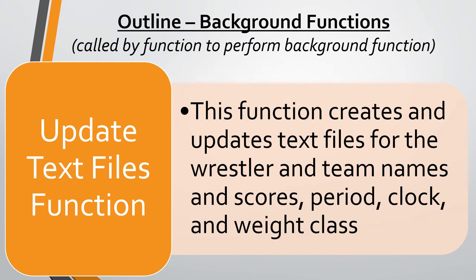There is one important background function called the update text files function. Whenever the scoreboard updates, the clock updates, the weight class updates — any of those changes occur — all the text files have to be updated. This function is called constantly throughout the program to give the effect of the scoreboard actually changing. It works by opening the existing text file, converting the value to a string, writing it to the file overwriting the current content, then closing the file, which mirrors the change in OBS on the scoreboard.